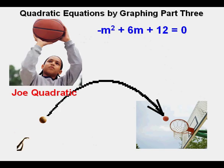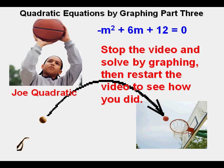Let's look at this quadratic equation, -m² + 6m + 12 = 0. Stop the video and find the solutions by graphing. After finding the solutions, restart the video to see if your solutions match Joe's solutions.